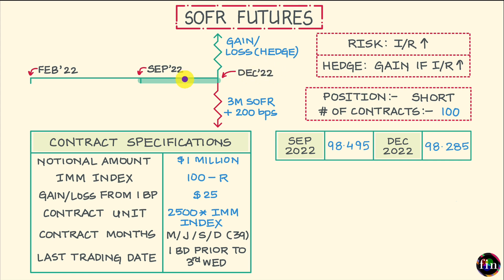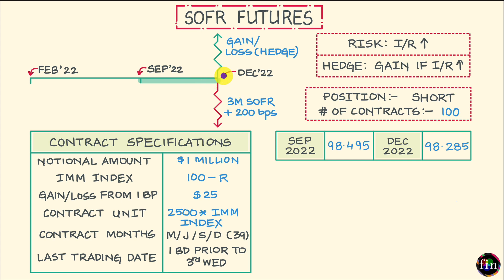This is important because we want the three-month implied SOFR for our loan to exactly match the three-month implied SOFR which our hedge — the three-month SOFR futures — ends up calculating on 20th December 2022, one business day prior to the third Wednesday of the contract delivery month.